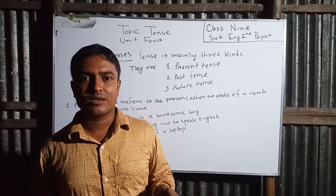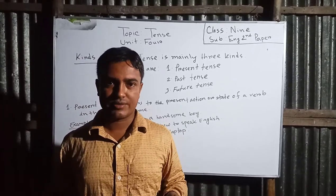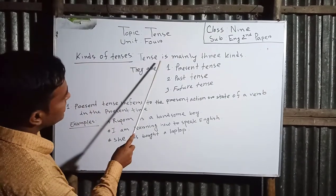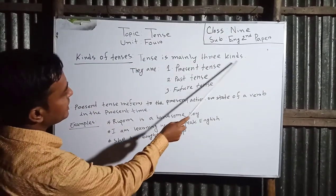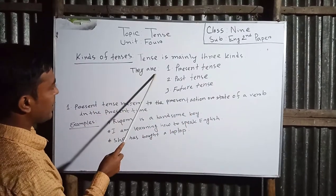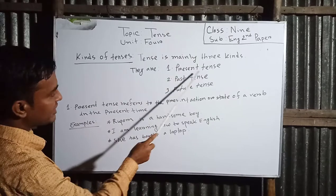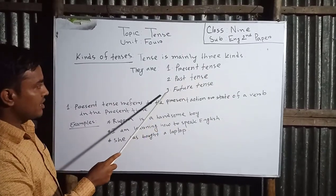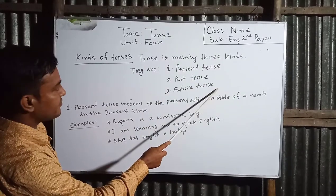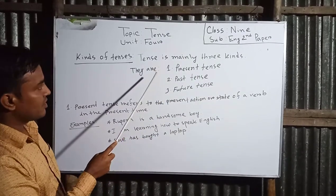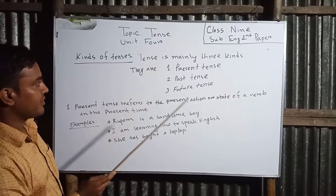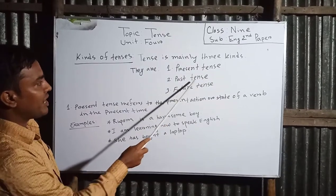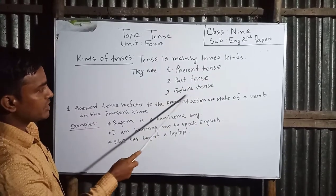Dear students, now let's see the kinds of tense. Look at the whiteboard please. Tense is mainly three kinds. They are: one, present tense; two, past tense; and three, future tense.